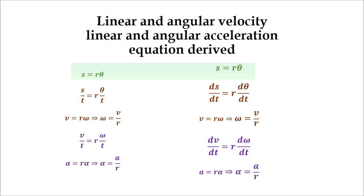We know that angular displacement s is equal to r theta, where r is the radius and theta represents the angle. Divide both sides of this equation by t. We will get s by t is equal to r into theta divided by t.